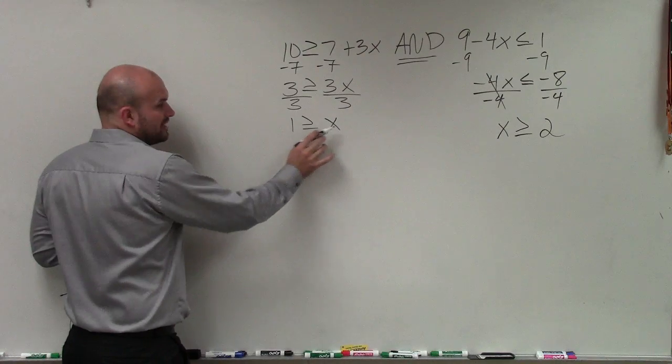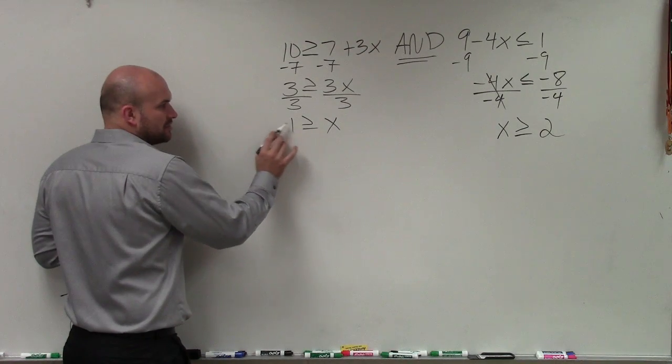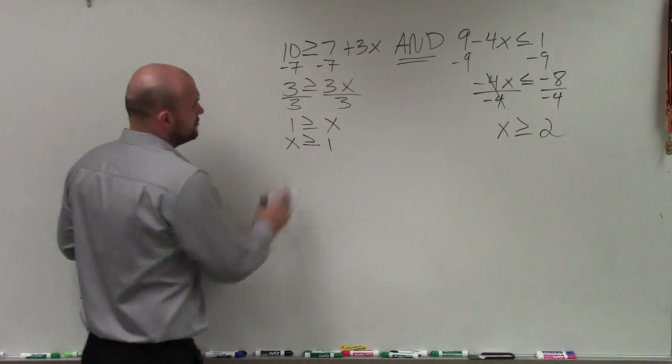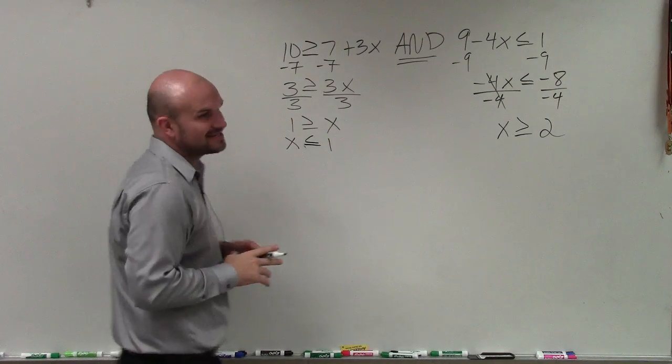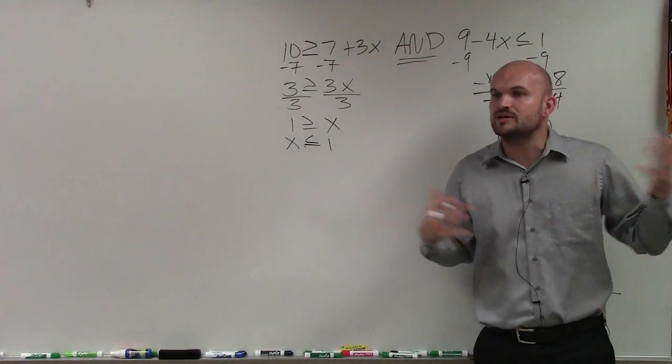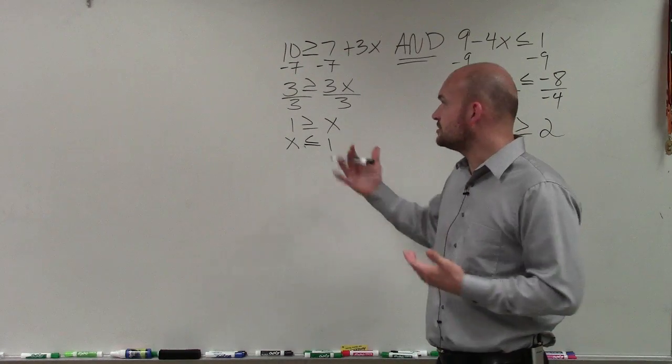So to do that, this is saying 1 is greater or equal to x, or x is less than or equal to 1. So I'll just rewrite this. I made a mistake. So x is going to be less than or equal to 1. So I just rewrite it with the variable on the left-hand side, because we like to read from left to right. So it's much easier to go about it that way.